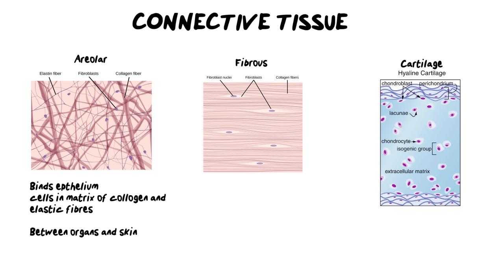Our first connective tissue is areolar tissue, a very basic tissue that binds epithelium. It often sits below the epithelial tissue, sticking those epithelial cells to the next tissue. It must be cells suspended in a matrix, which is mostly made of collagen and elastic fibers. The elastin fibers are thin and stretchy, whereas the collagen fibers are much thicker and give strength to this tissue. We find areolar tissue in between our organs, attaching them loosely to each other, and also under the surface of the skin.